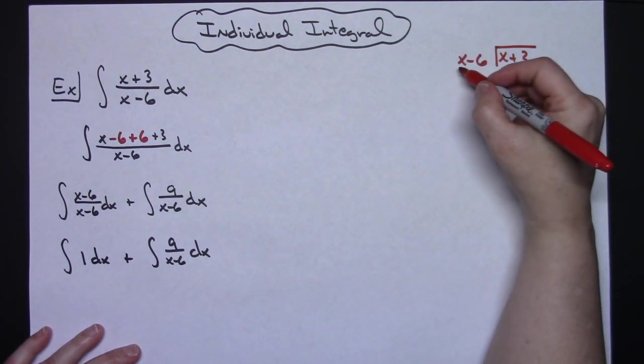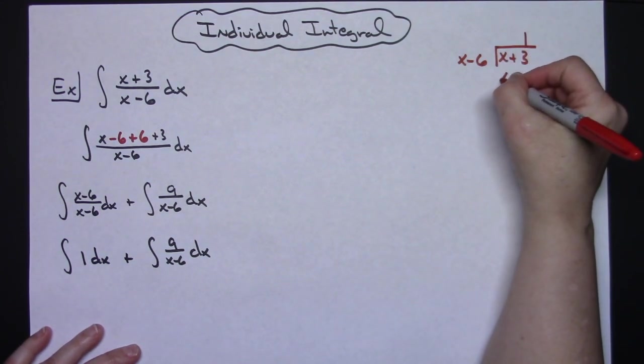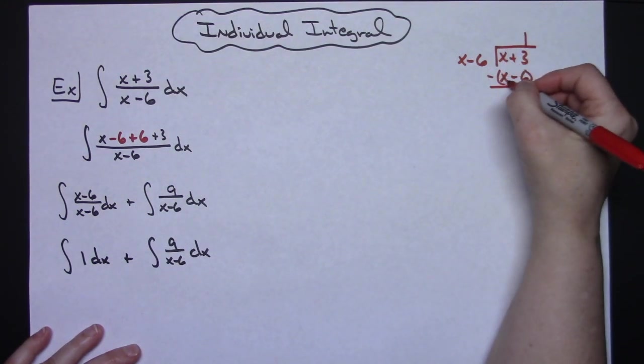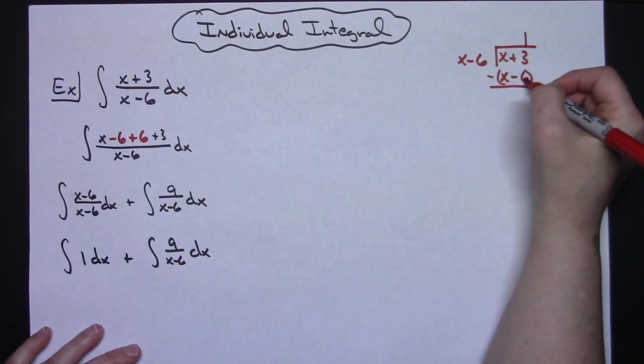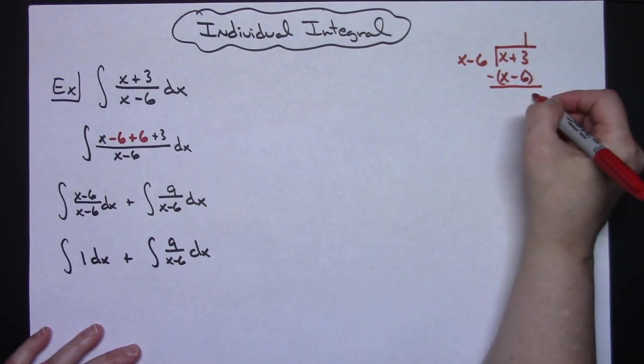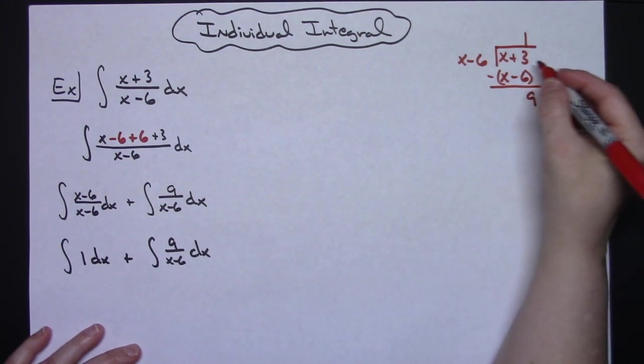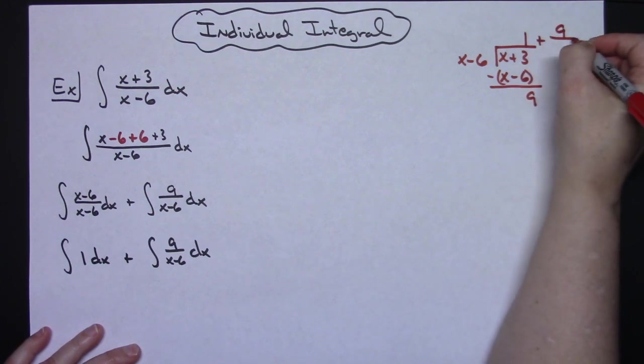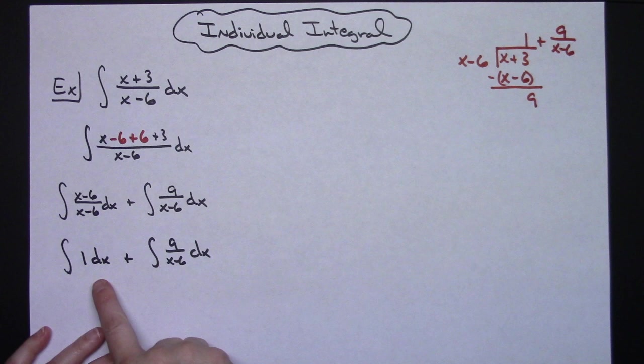Okay, x goes into x one time. 1 times x-6 and we are subtracting that. The x's fall out, 3 minus a negative 6 there is going to give me a 9. So then I know that my quotient is going to be 1 plus 9/(x-6).